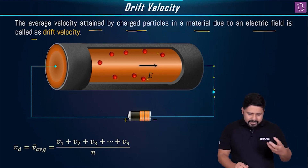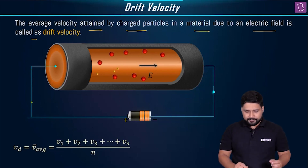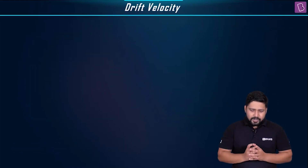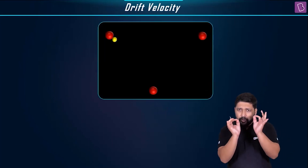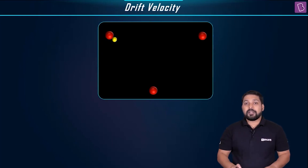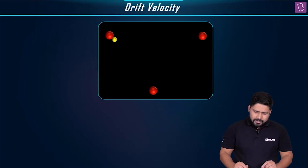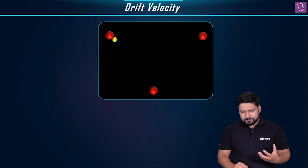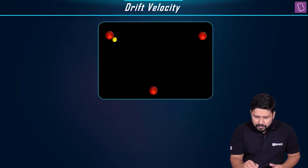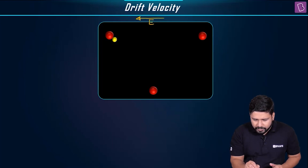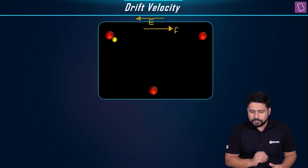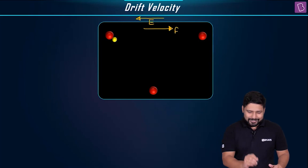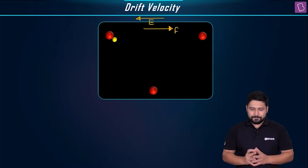Let us see how we get this drift velocity. Let us say we are talking about one particular particle and we want to analyze what goes on. Let us say there is some electric field in this direction — this is the direction of the electric field. The net force will be in this direction, on these electrons.